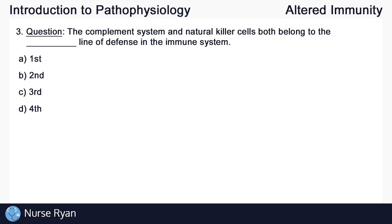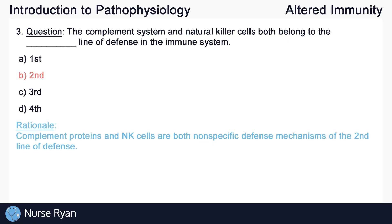Question number three: the complement system and natural killer cells both belong to the blank line of defense in the immune system. The answer here is B, the second line of defense. Complement proteins and NK cells, or natural killer cells, are both non-specific defense mechanisms of the second line of defense.